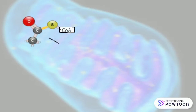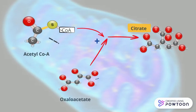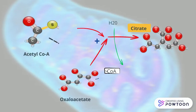In the first step, acetyl-CoA will combine with oxaloacetate to form citrate or citric acid. A molecule of water will combine with the CoA from acetyl-CoA to form HS-CoA.